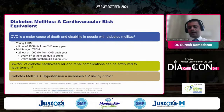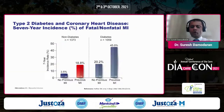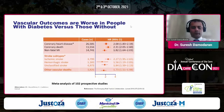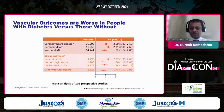We know from a 1998 paper that type 2 diabetes on coronary — almost seven years' incidence of fatal or non-fatal MI. So with diabetes, the risk is extremely high. Vascular outcomes: coronary disease, non-fatal MI, stroke, and other things are more prevalent in patients with diabetes compared to the non-diabetic population.